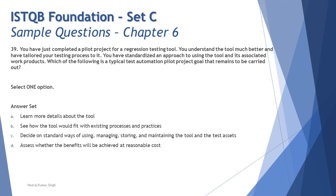Option C says 'decide on standard ways of using, managing, storing, and maintaining the tools and the test assets.' The question already states you have standardized an approach to using the tool and its associated work products — which are the test assets. So that's also already done, making option C not valid either.